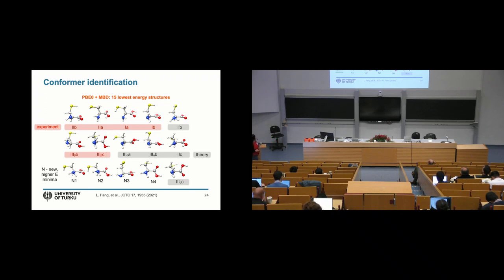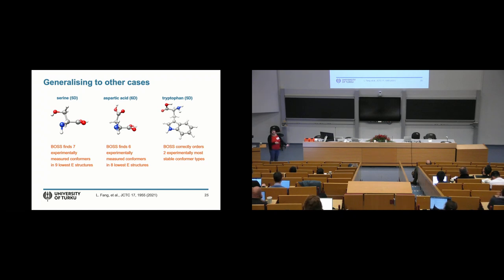But we did check this with many other cases so that we are sure that this works correctly. In all of these cases, after a full structure search and extracting all the local minima, we found the experimentally measured conformers in our lowest X conformers. And this is what we were really looking for. And these kinds of convergences are obtained with about 1,000 DFT static calculations.